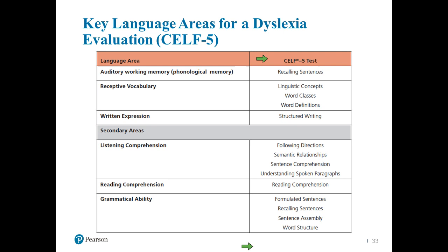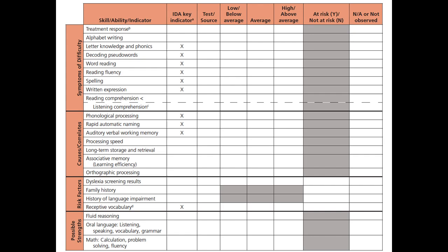I love this chart, which you can find in the white paper. It brings out the symptoms, causes and correlates, risk factors, and possible strengths, and gives you a nice chart to highlight and track a child's assessment history. You can track whether or not it's an area where you find them to be at risk or not at risk, what were they below average, average, or high average, and what source did you find that with. Integrating this into your assessment will help you organize it much better.